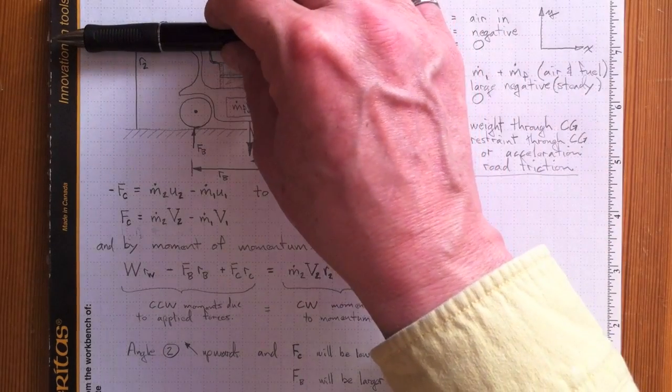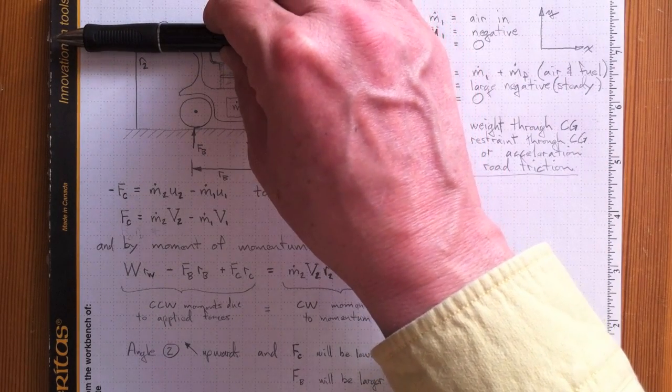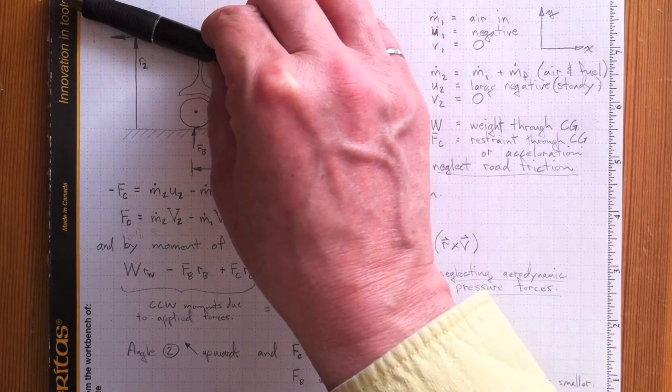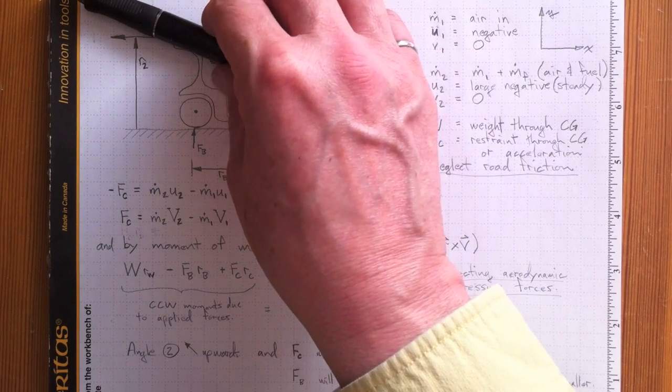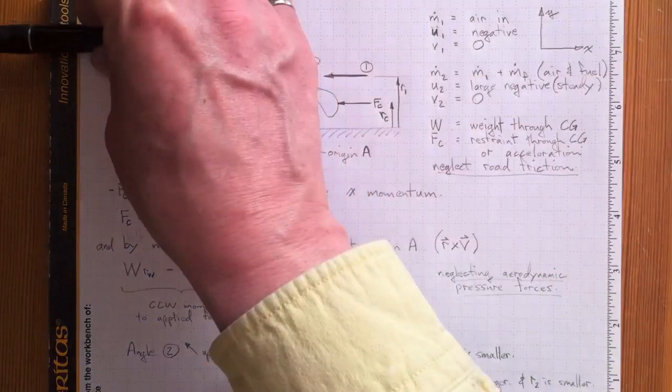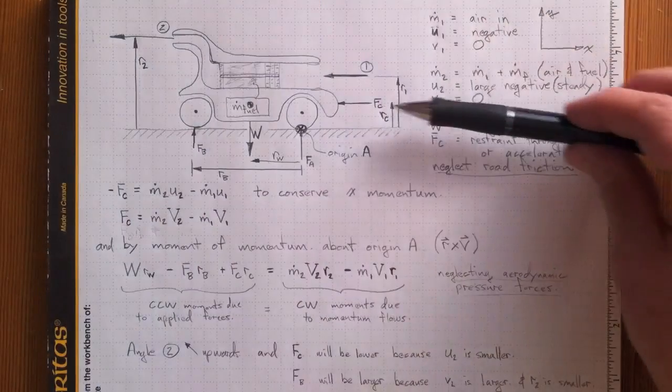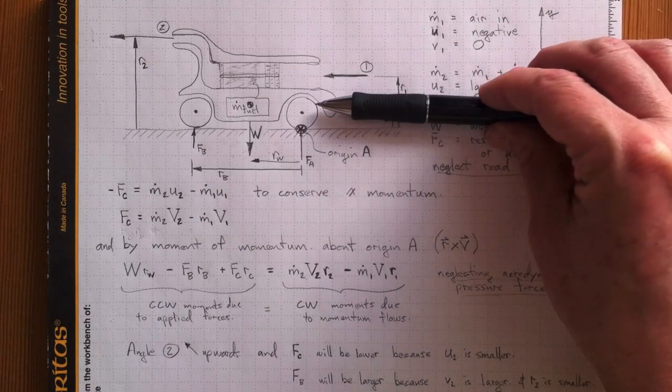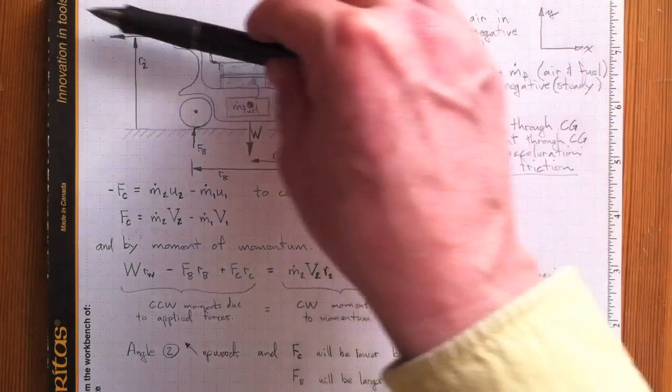Now, if we take this jet and we increase its angle upwards like that, that's going to have two effects. One, it's going to mean that the component of the velocity in the x direction is smaller. That's going to make Fc smaller. The other thing is, as we tilt it up, the moment arm, R2, between the axis of the thrust and this origin A becomes smaller.